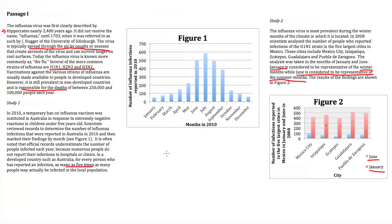If you go back to Figure 1, this may seem counterintuitive until you realize that the months of May, June, July, August, and September are the winter months in Australia, because Australia is in the southern hemisphere. So in Australia, more people get sick with the flu in the winter time than in the summer, just like in Mexico. With all of this information, let's go see if we can answer the questions that accompany this passage.